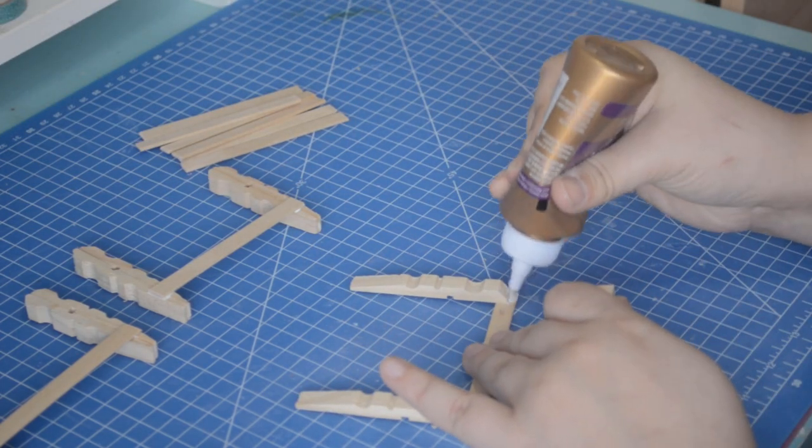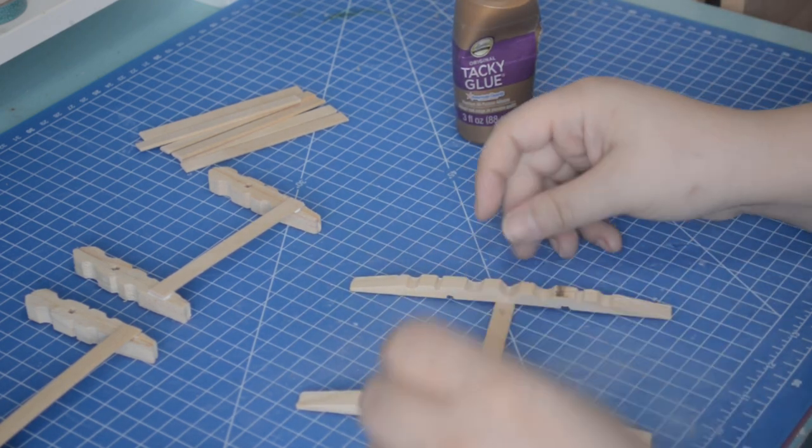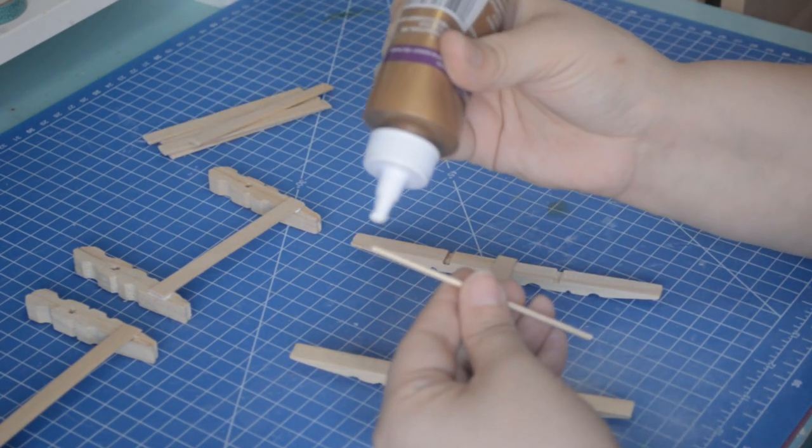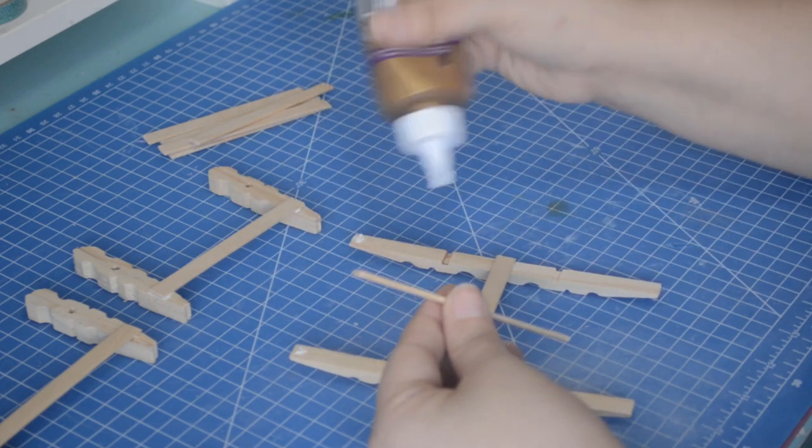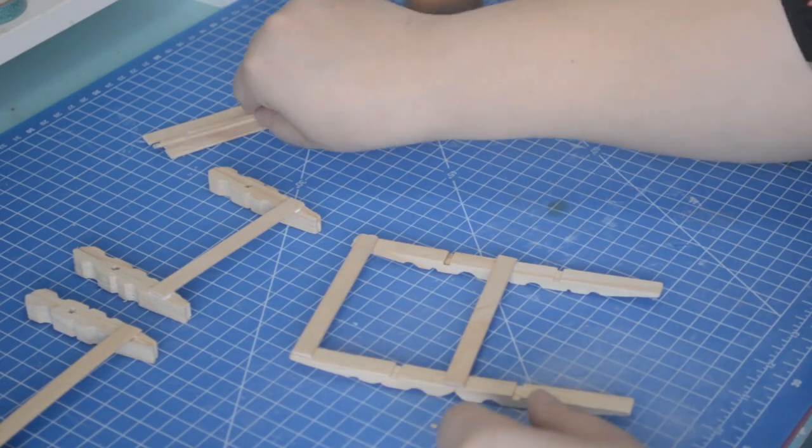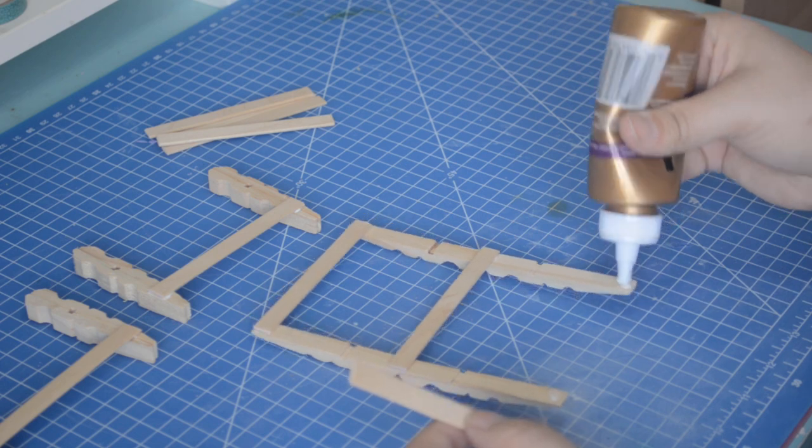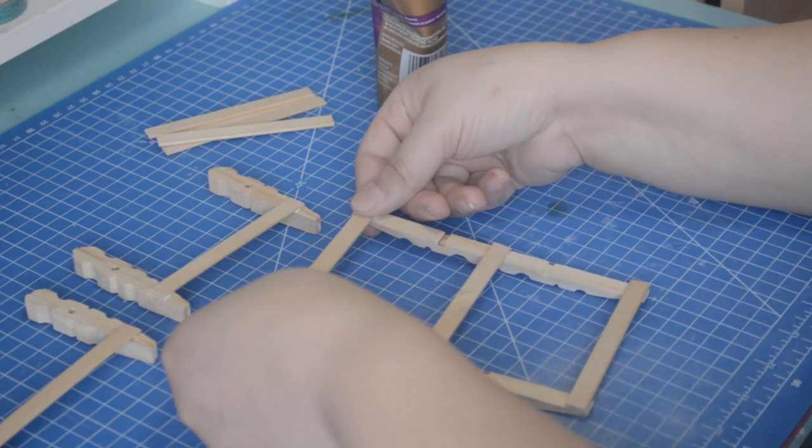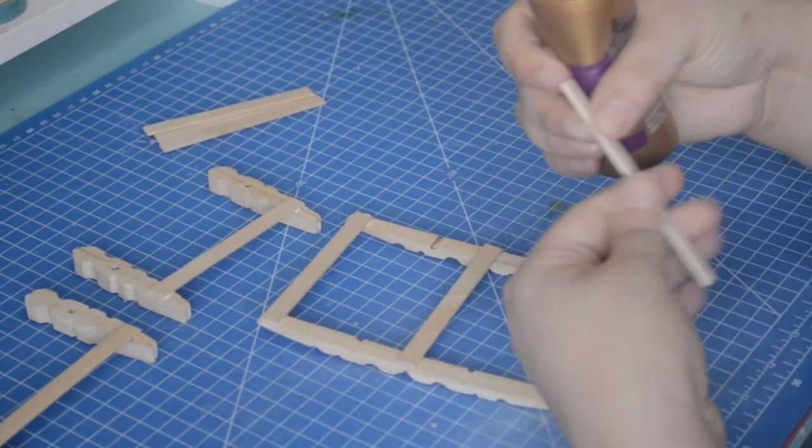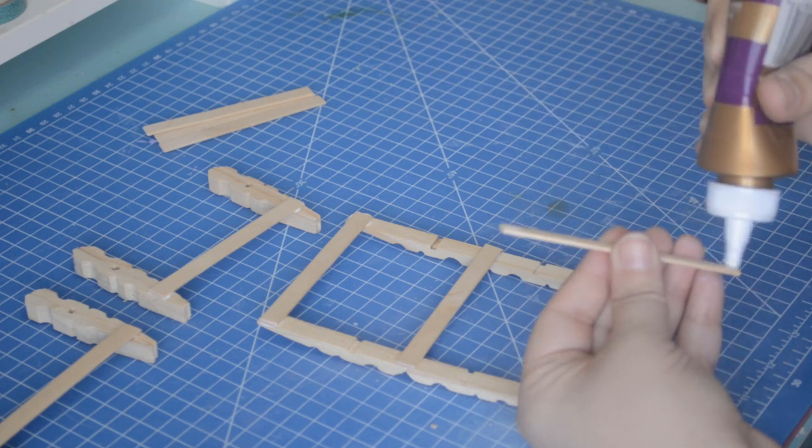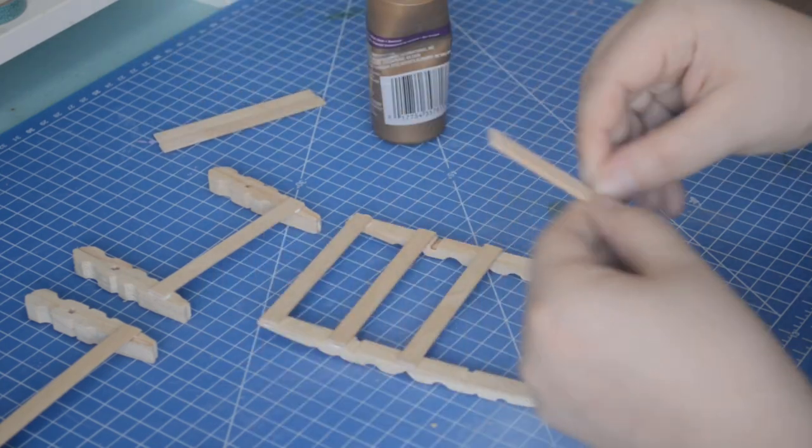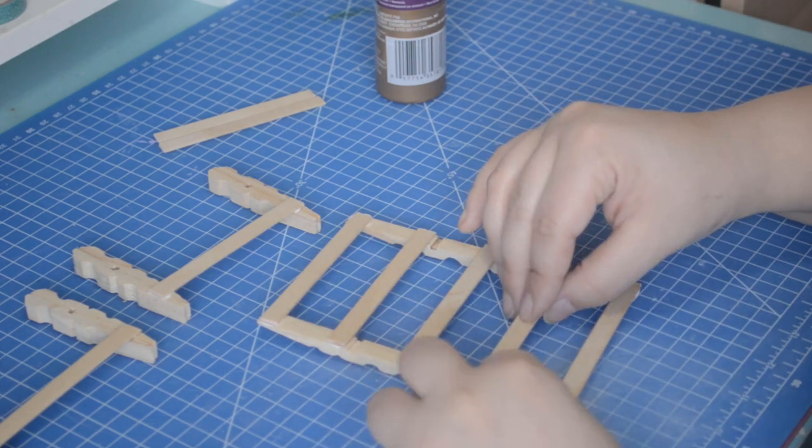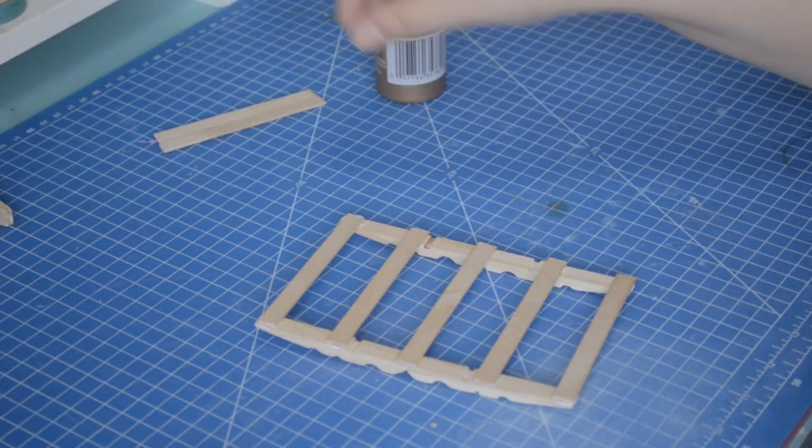To finish the bed frame, we are gluing down the rest of our popsicle sticks to make it stronger. Now let it all dry, no touchy.